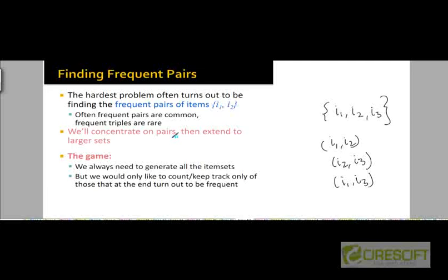So we are going to concentrate on pairs because pairs are going to be more numerous than triples, quadruples, and so on. The technique we are going to see for keeping track of and finding frequent pairs of items can then be extended to triples and quadruples.